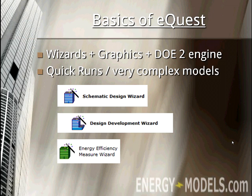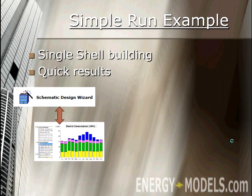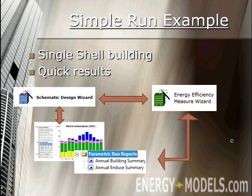So where do we begin? Let's start with a simple calculation. Let's say we have a single shell building and we just want some quick results. We could run the schematic design wizard in literally a matter of minutes and view the standard reports. In addition to that, you could run the schematic design wizard and then run the energy efficiency measure wizard, which is run after you complete your schematic design. From the EEM wizard, you could get the standard reports as well as the parametric run reports comparing multiple options.